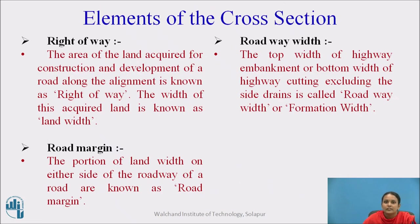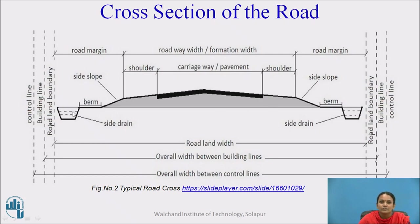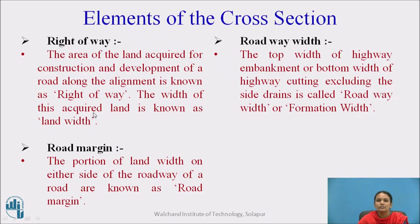Roadway width is the embankment or bottom width of the highway cutting. From one road margin to the next road margin is called the roadway width. It may be in embankment or in cutting. Embankment means when the original ground level requires filling to increase the road height. Cutting means the road is constructed below the original ground level.